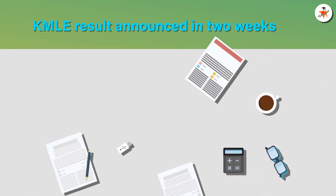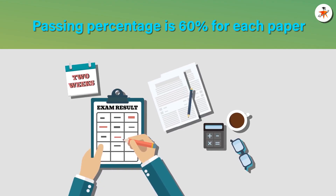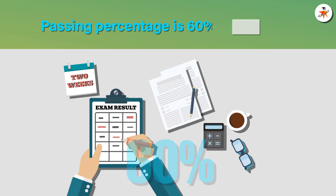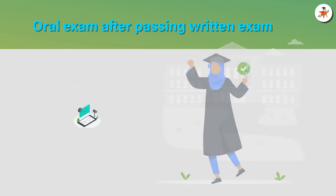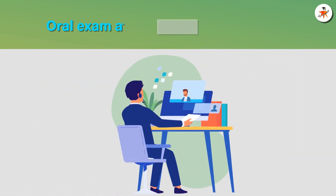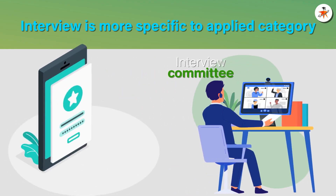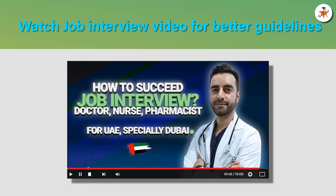Normally, the result will be announced within two weeks of sitting for the KMLE exam. The passing percentage for both papers may vary each time, as determined by Kuwait Board of Examiners, but one should target 60% or more in both papers. After successfully passing this exam, the candidate may be notified for an interview or oral exam, which may be taken online from your own country. There is a specialised interview committee for each field in the Health Licensing Department. Although this interview will be more specific in nature related to your applied category, our job interview video will be beneficial for you while handling some common issues. We have provided the link of this video here, as well as in the description section.